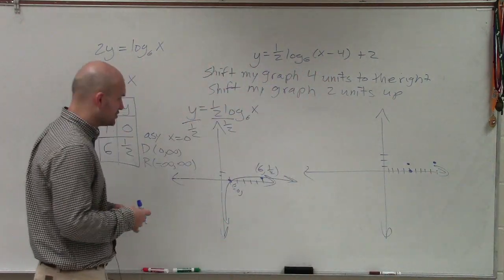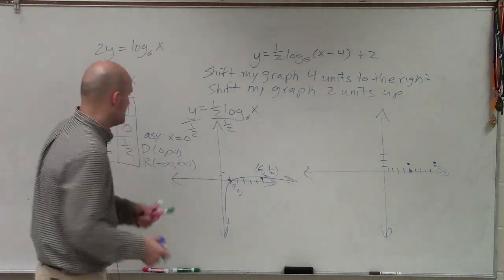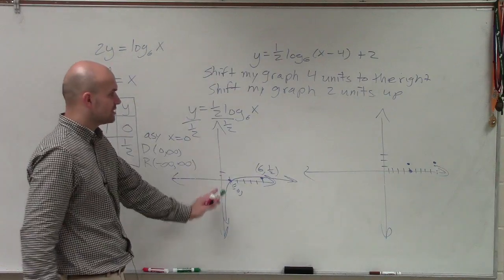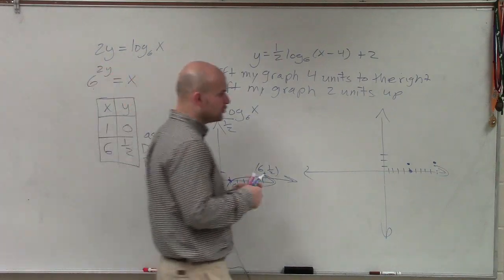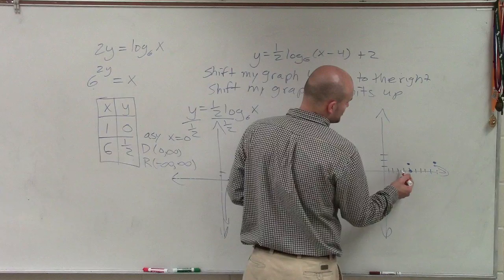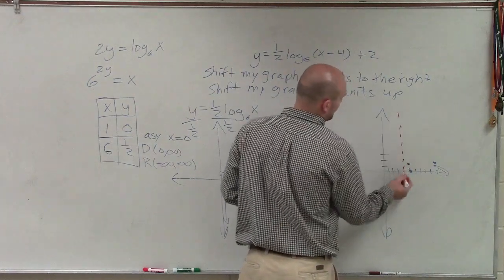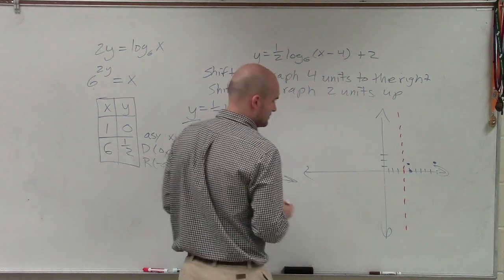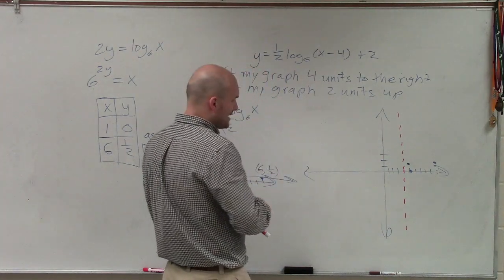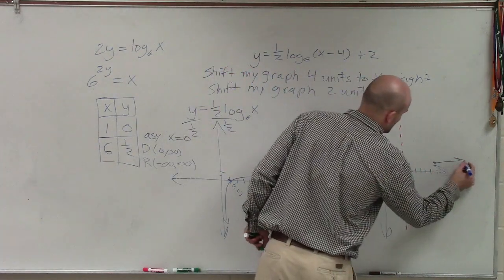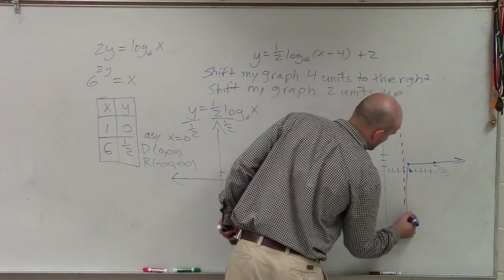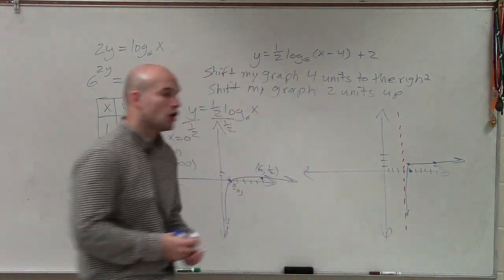Now the next thing what I always like to do is draw the asymptote first. My asymptote was originally at x equals 0. That asymptote has now been moved to x equals 4. 1, 2, 3, 4. Because the graph was shifted four units to the right. All right, so now I can graph this.